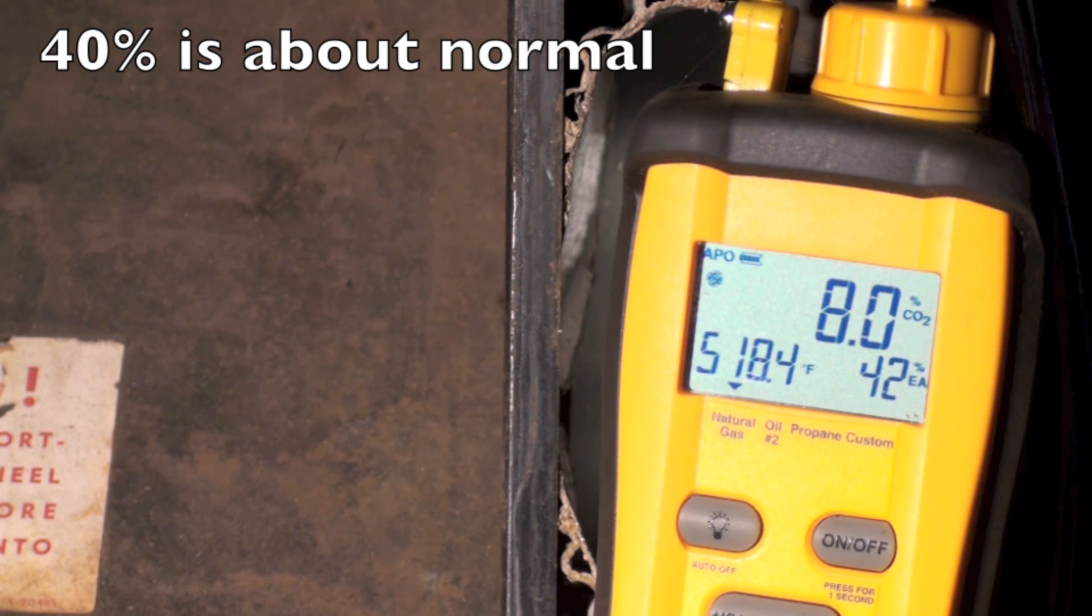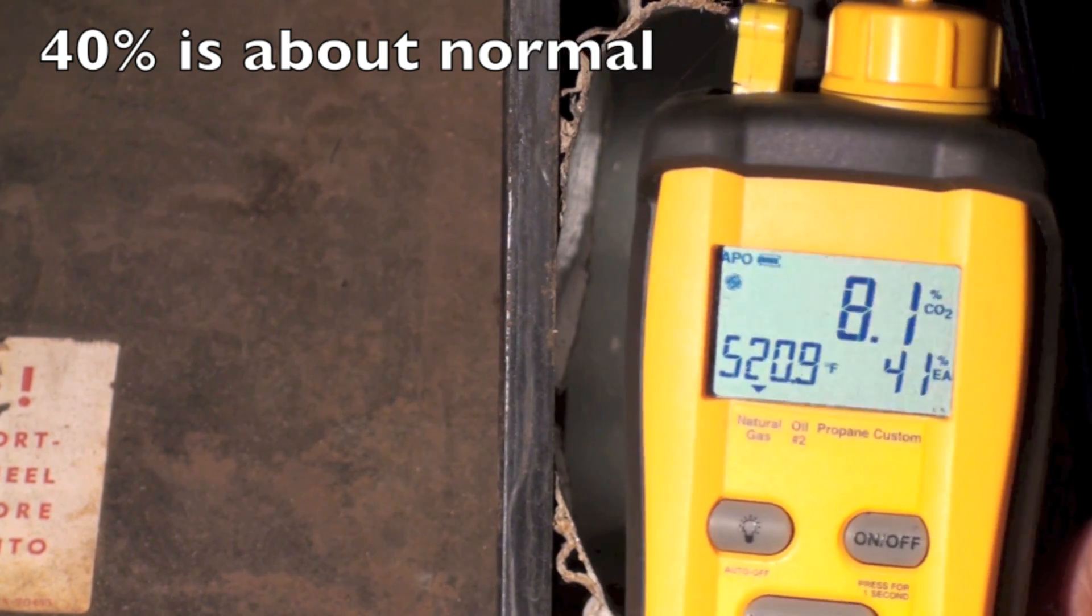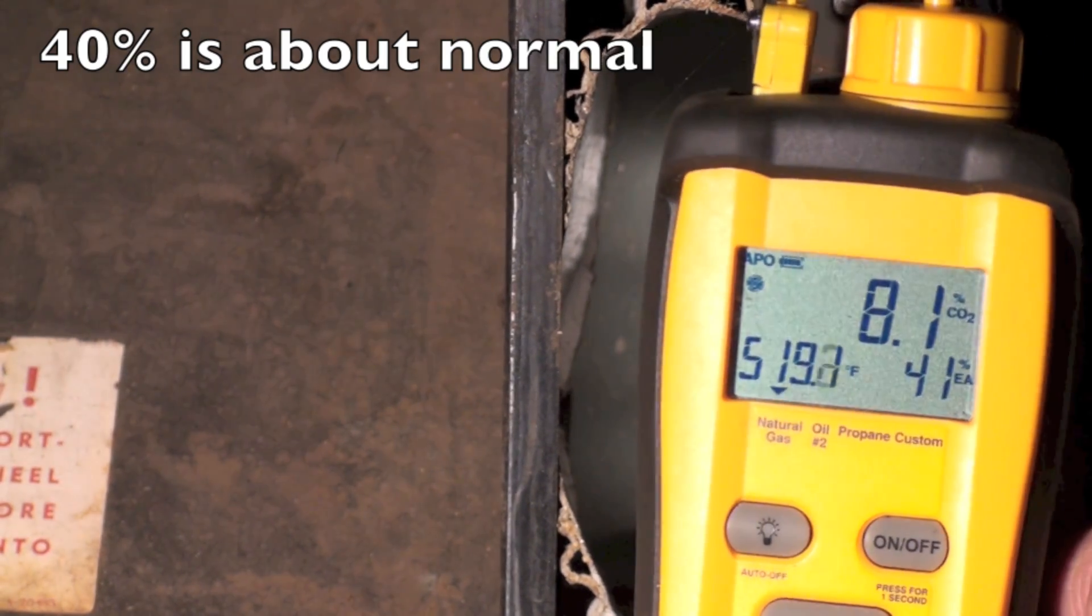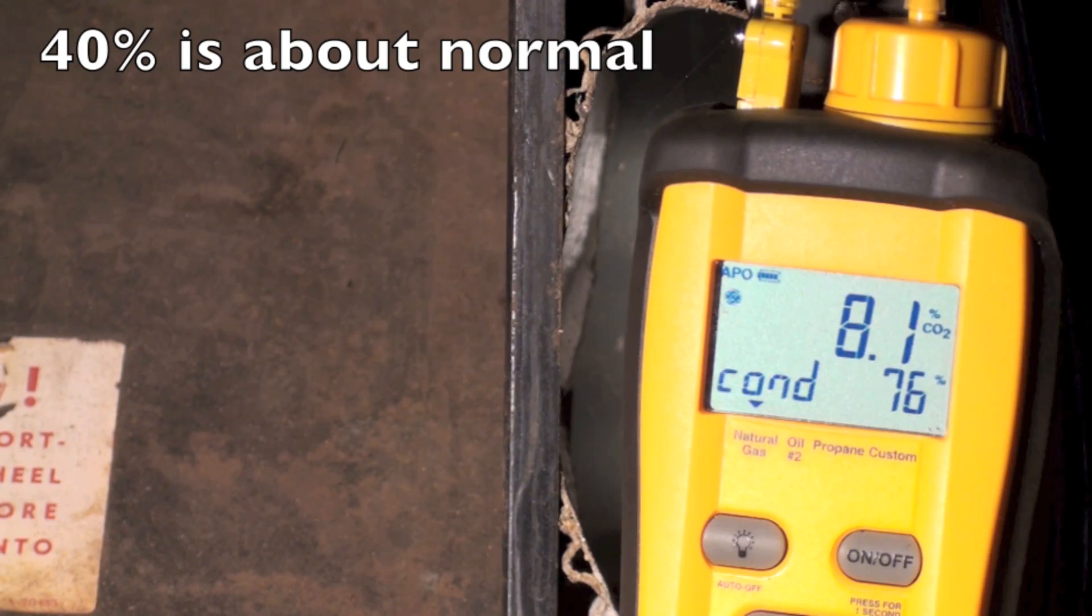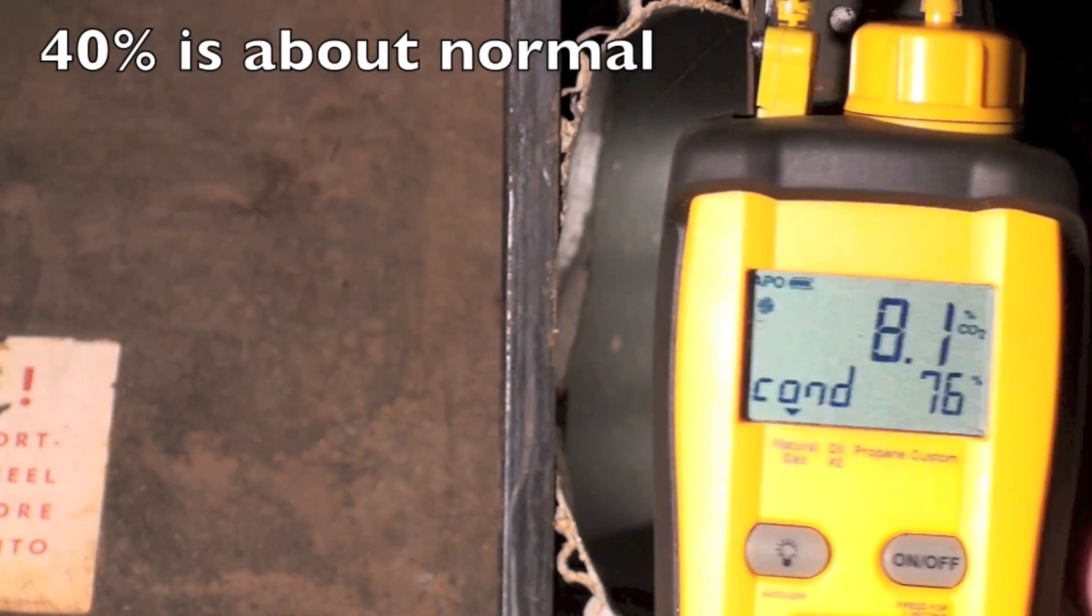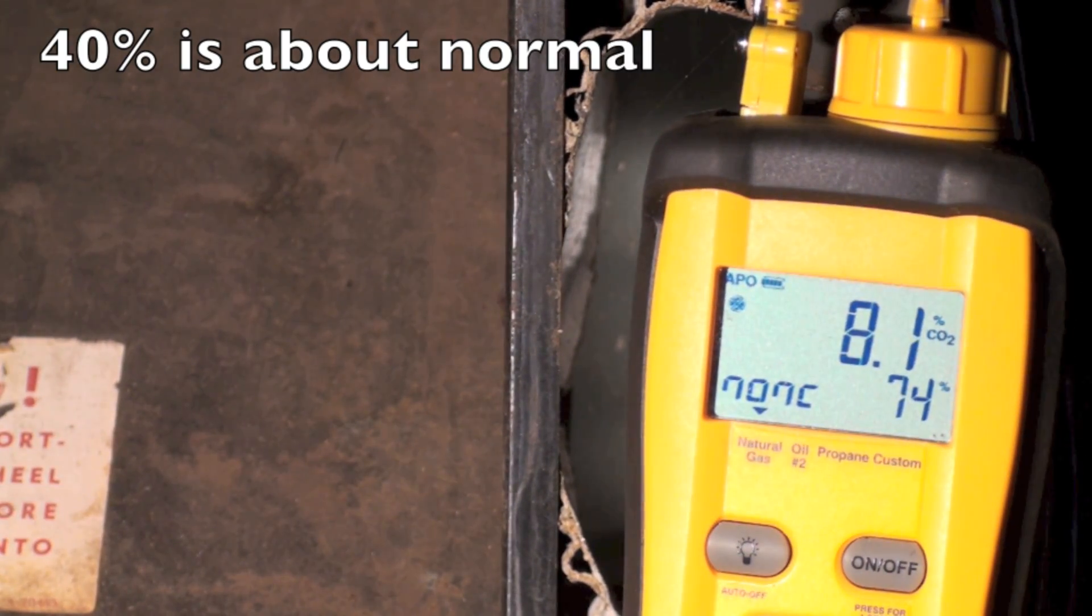So there's 40%, 42% more air than is necessary for combustion. Okay. Now let's go down and look at efficiency. We'll get to non-condensing, and we're at 74%.